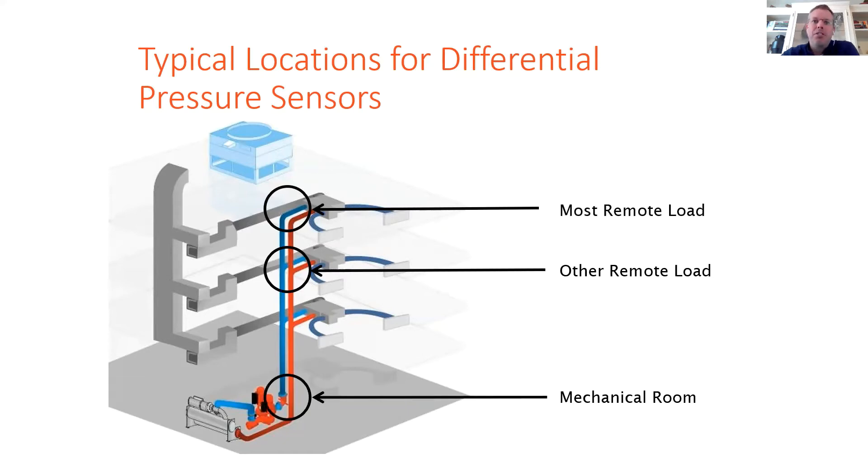The last location is often used in retrofit applications, and when an engineer doesn't specify an exact location of the sensor, which is in the mechanical room or between the pump and the first load. So the minimum head pressure set point is then basically set at the pressure drop of the entire piping system and allows very little turndown.